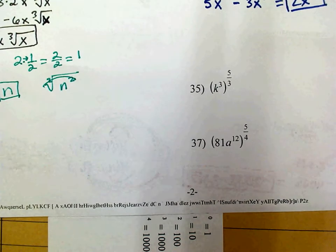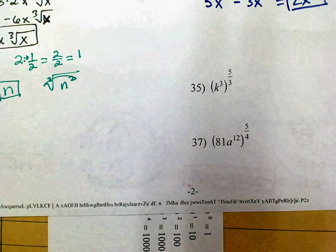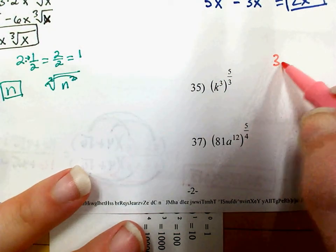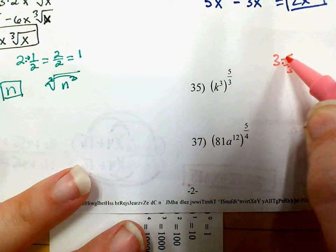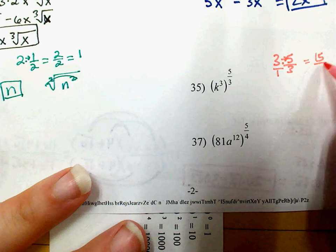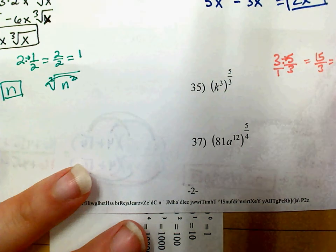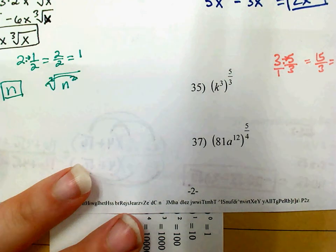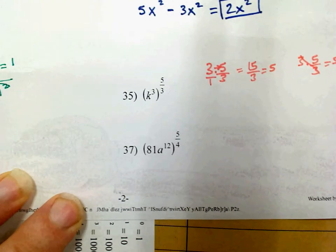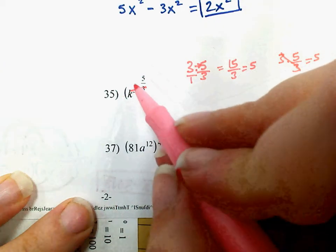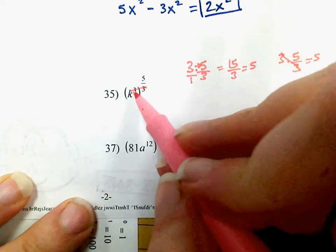On the next one, very similar — I've got a power raised to another power, so I'm going to multiply 3 times 5 thirds. If you multiply across, it's 3 over 1 times 5 thirds — that is 15 thirds, which is just 5. The 3s cancel each other out, one in the numerator and one in the denominator, so this is just k to the 5th.